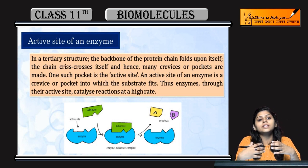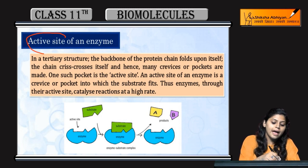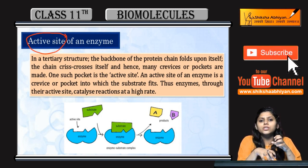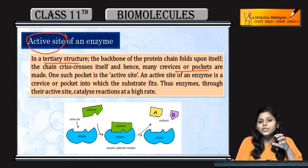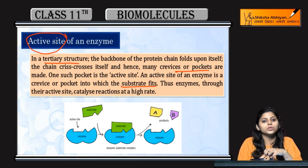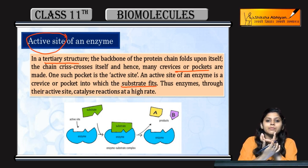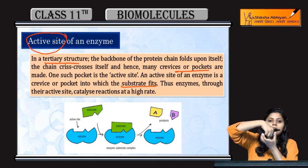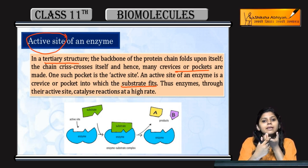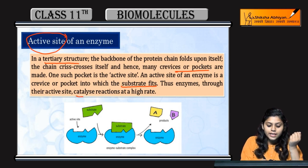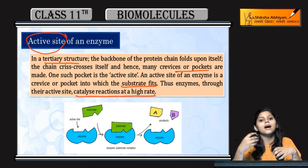Ab enzyme different kaise hai baqi sab normal proteins se? Enzymes ke paas present hoote hai active site. Jho tertiary structure hai enzymes ka, unmae kuch pockets ya crevices present hoote hai. Yhe jho pocket or crevices hai, yahaan pe substrate ake fit hoote hai. Yhe active site hai. Iski wajhe se enzyme active hoote hai aur reactions ko higher rate pe catalyze karta hai.